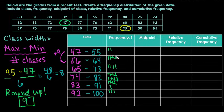And then what we would do is we would count our tally marks and that's how many is in each class. So we would have two that fall between 47 and 55. We have five that fall between 56 and 64. We have four between 65 and 73, 10 between 74 and 82, six between 83 and 91, and three in our last class.